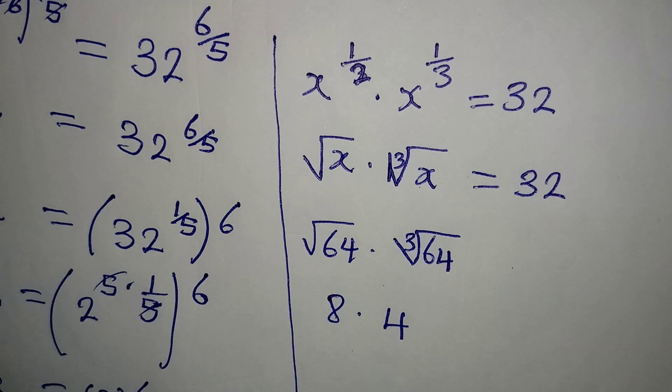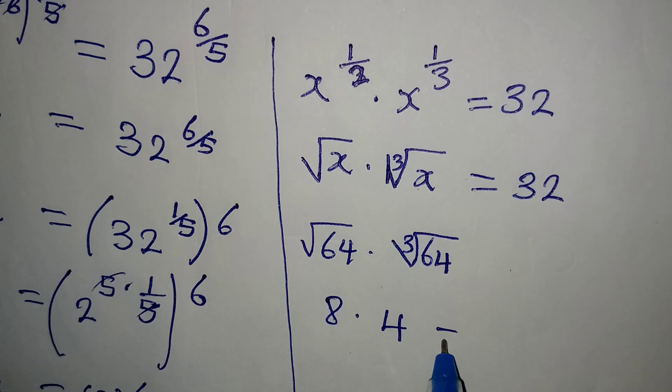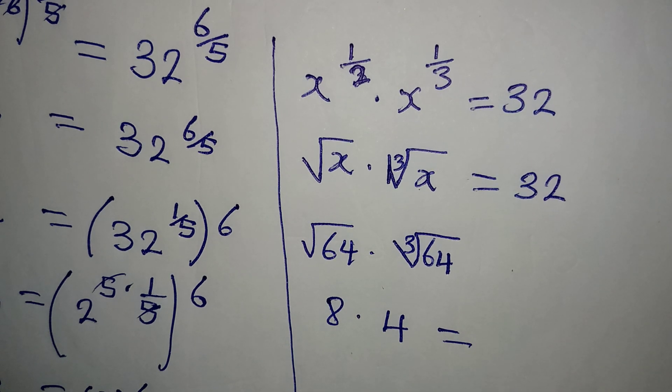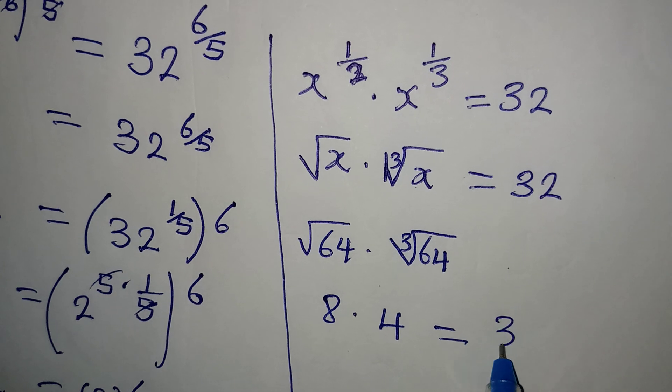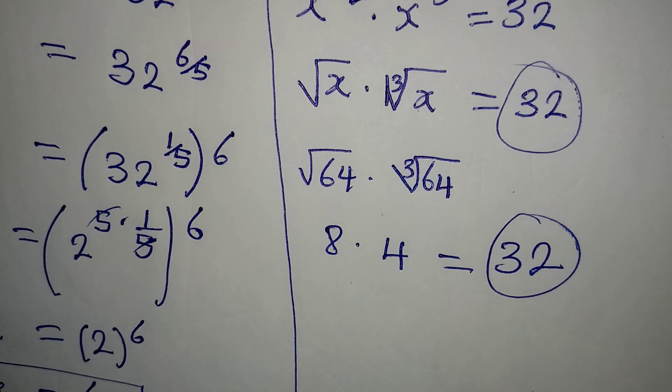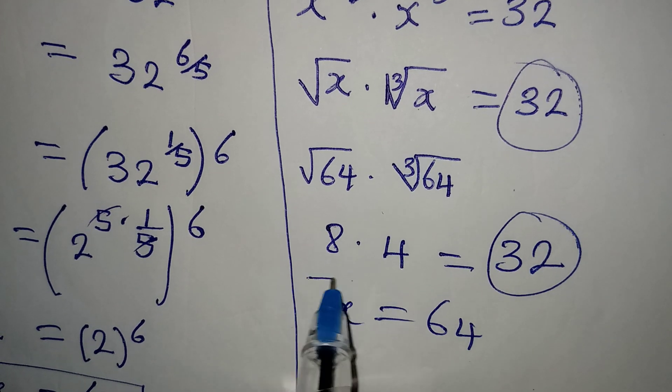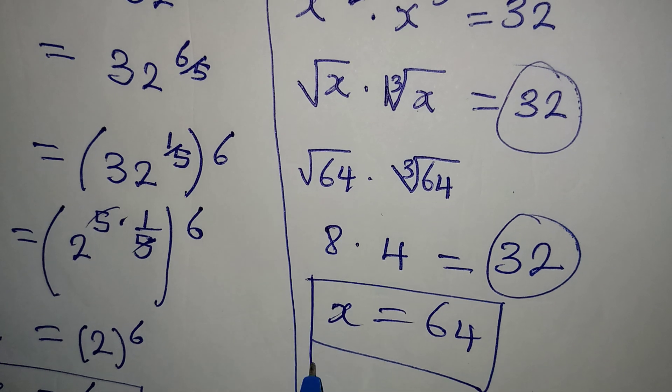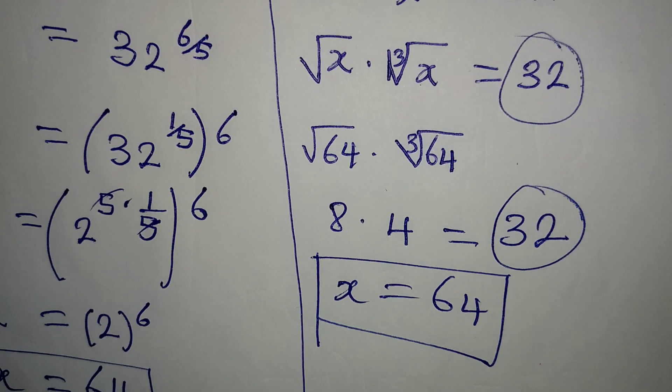Because 4 times 4 times 4 is 64. Now, 8 times 4, this is giving us 32. So this is to confirm that the value of x, which is equal to 64, satisfies the equation. Thank you for watching and do well to share this to your friends.